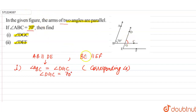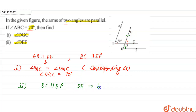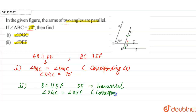In the second part, we need to find angle DEF. BC is parallel to EF, and DG acts as the transversal. Therefore, angle DGC is equal to angle DEF by corresponding angles, since corresponding angles are equal.